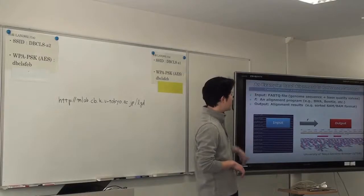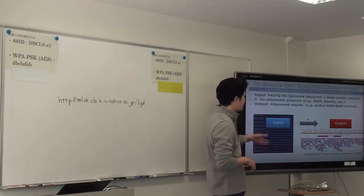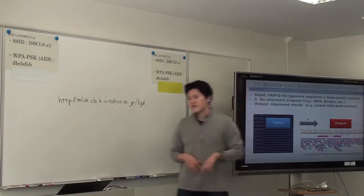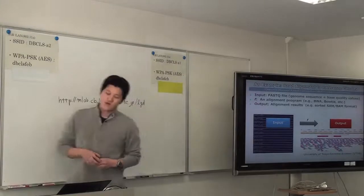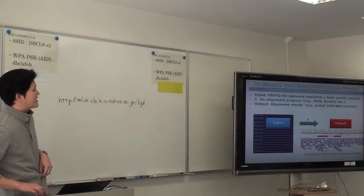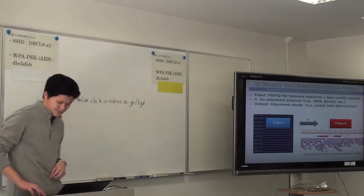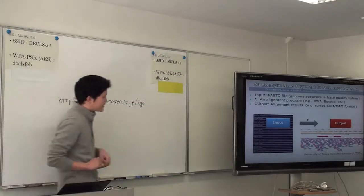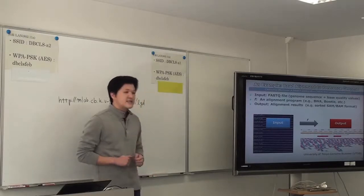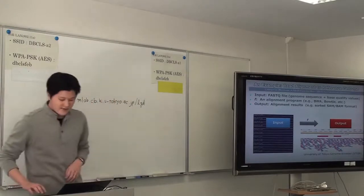A FASTQ file is a text format of sequence data, and the output contains alignment information showing to which chromosome and to which position the reads map. This screenshot is generated by UTGB, the University of Tokyo Genome Browser, developed in our laboratory.